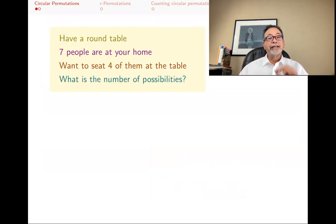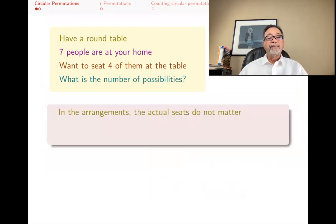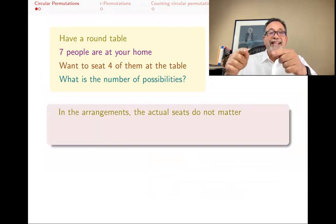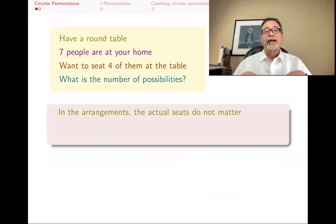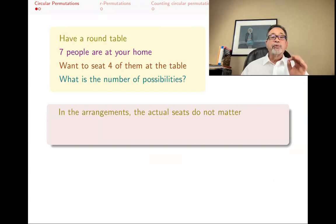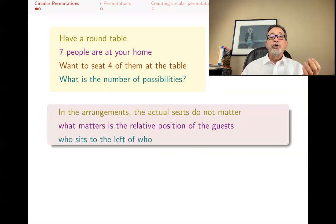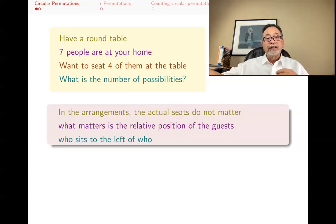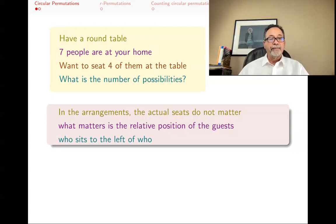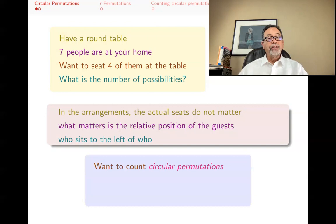I've got to tell you something about the seating arrangement around the table. In this arrangement, the actual seat doesn't matter — the seats are all identical. What matters is the relative position of the guests to each other. So what matters is who's sitting to the left of whom, who's on this side and on that side and across from me, not which seat I'm sitting in. These things are called circular permutations, and what we want to do is count them.